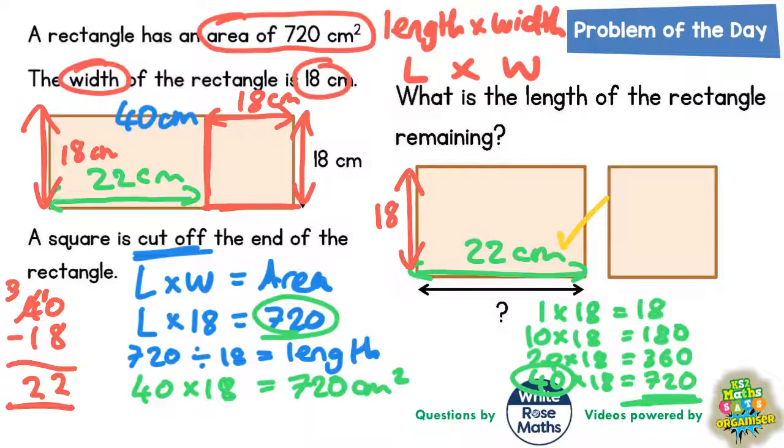We could go a stage further and work out the area of the remaining rectangle by doing 22 multiplied by 18. If you want an extra challenge, then you could work that out as well.